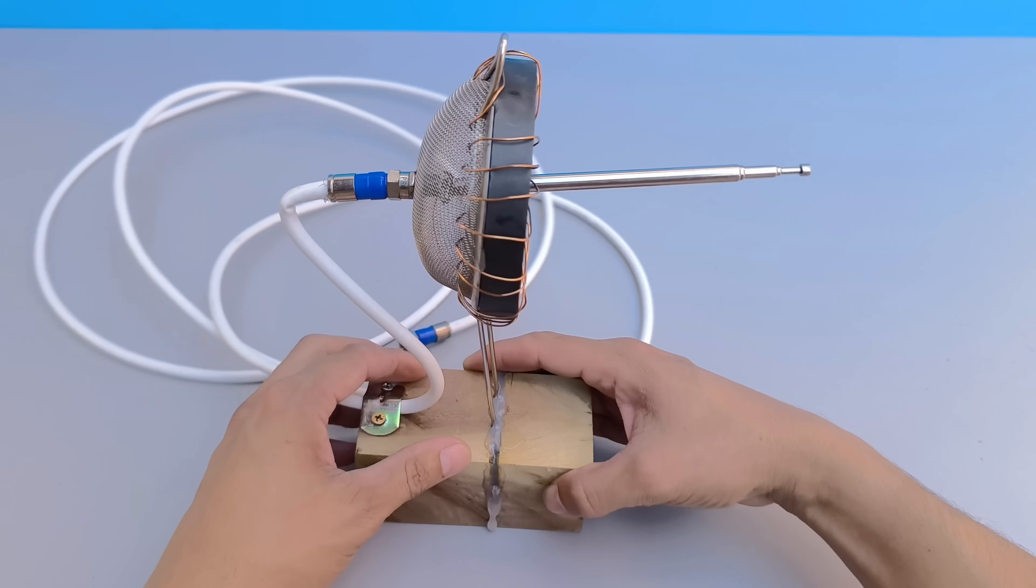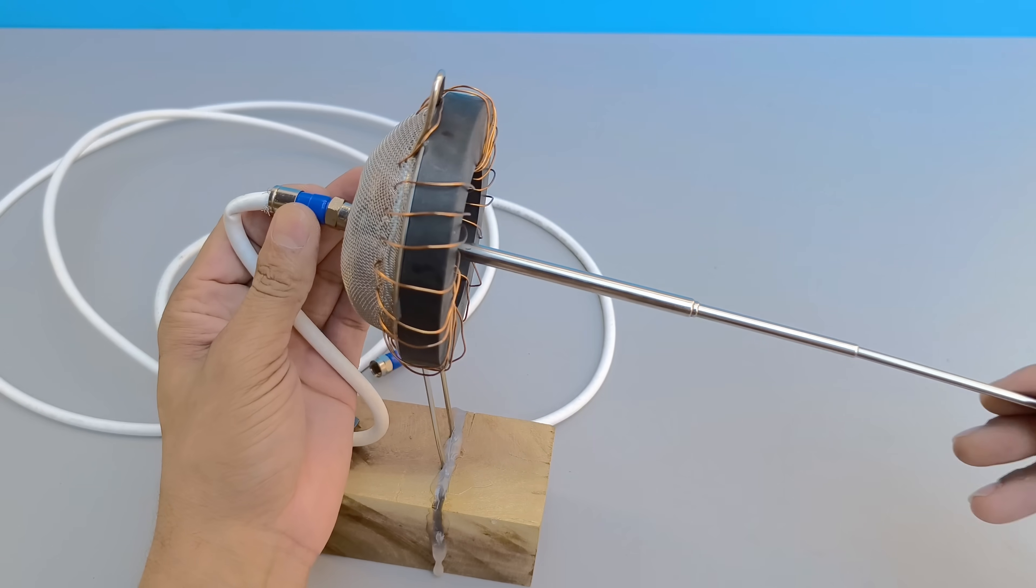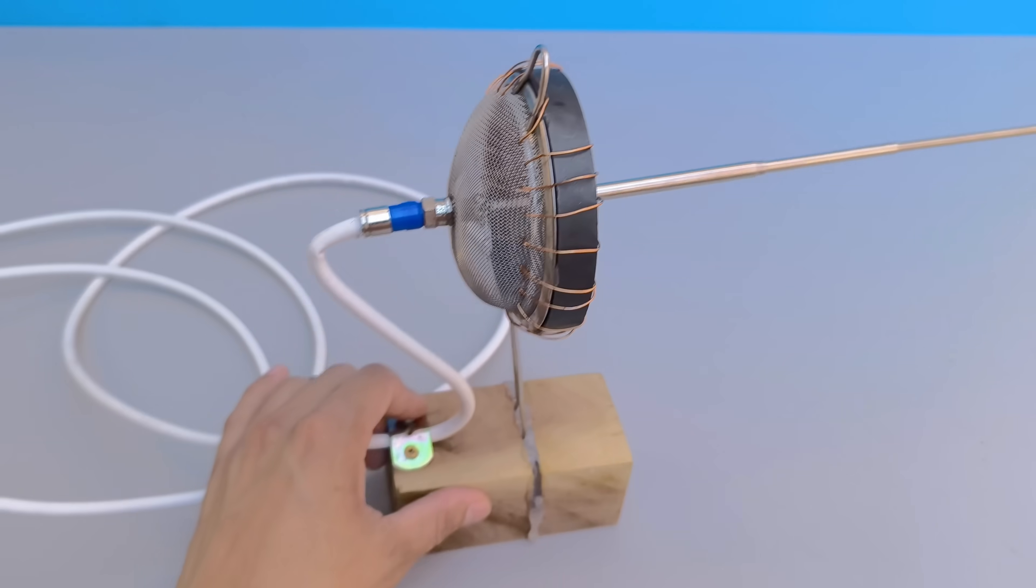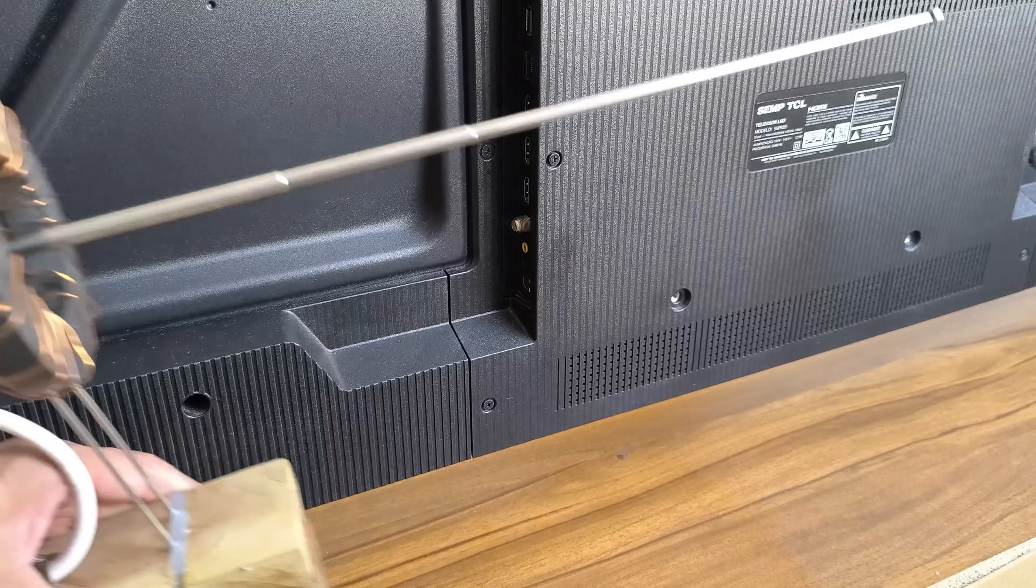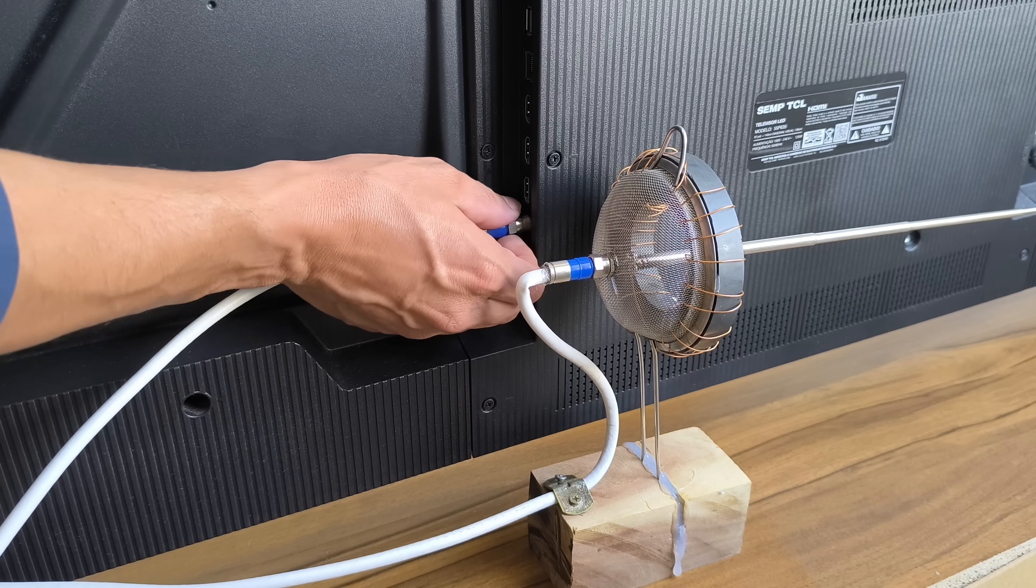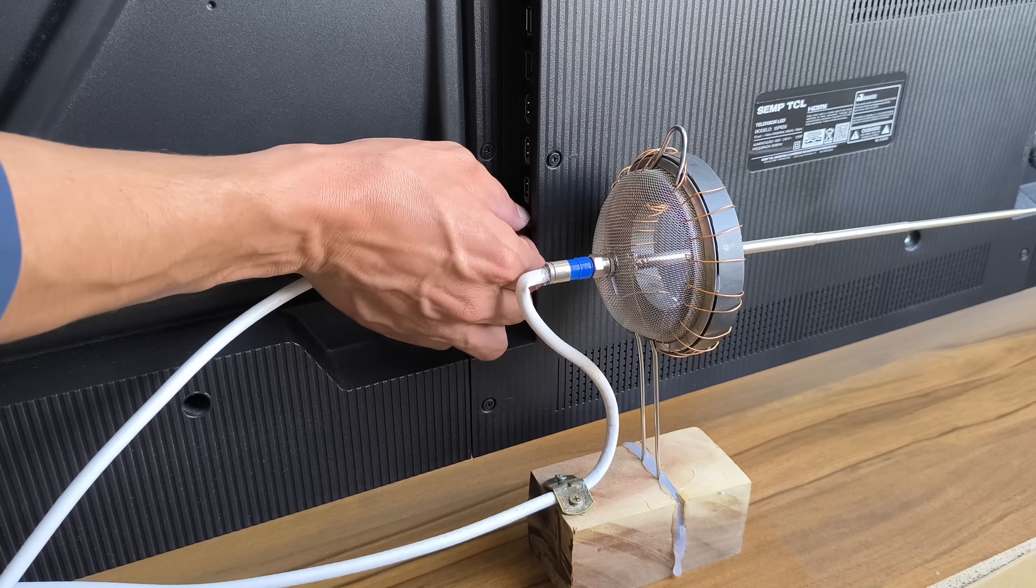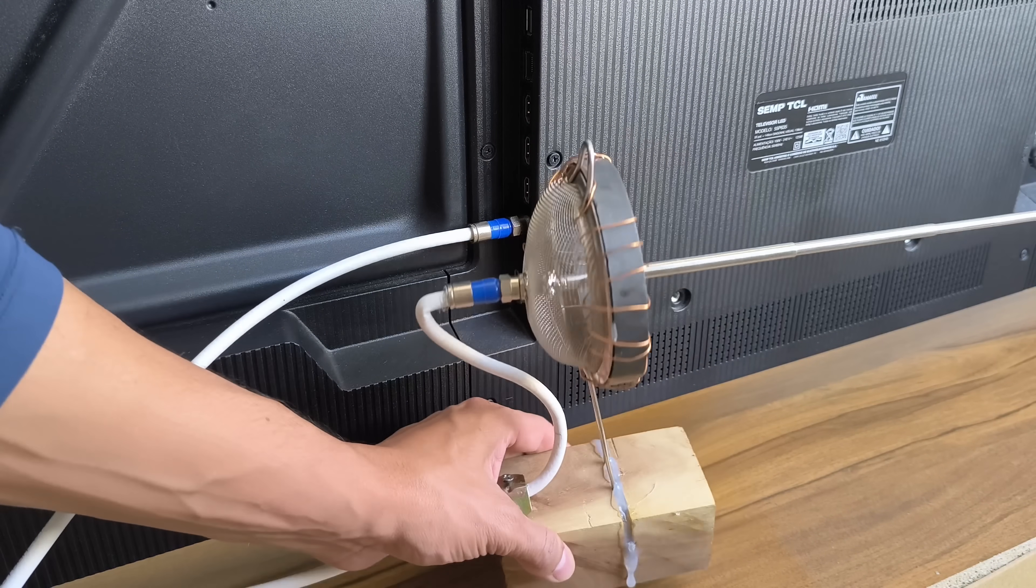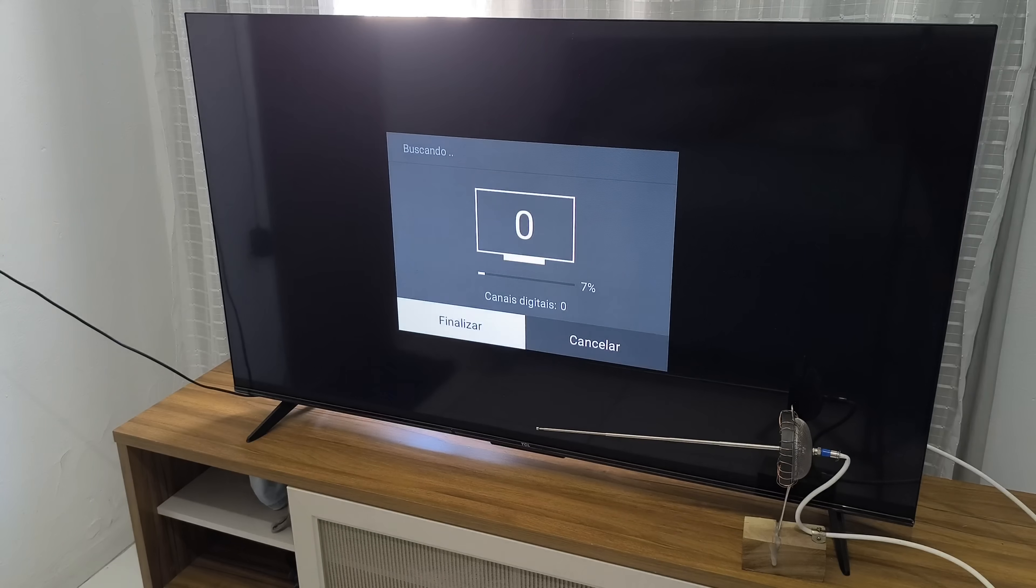Now that the assembly is complete, you can adjust the size of the telescopic antenna, extending it almost to its limit to further expand the signal reception area. The next step is to connect the coaxial cable to the antenna input on your TV. Once everything is ready, simply start searching for digital channels available in your area. The result is impressive. The antenna, made from simple everyday objects, can capture a huge variety of channels, bringing image and sound quality directly to your television.